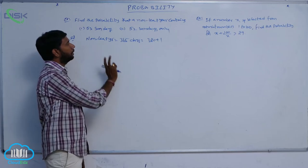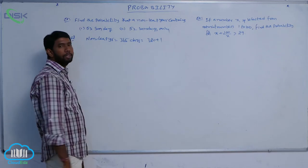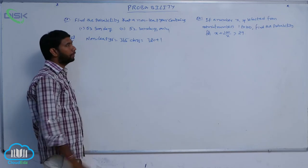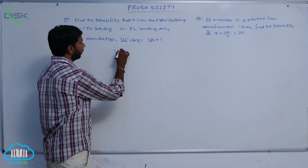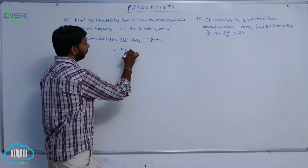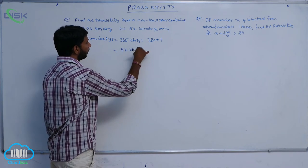A non-leap year has 365 days, which is equal to 364 plus 1 day, and can be written as 52 weeks plus 1 day.